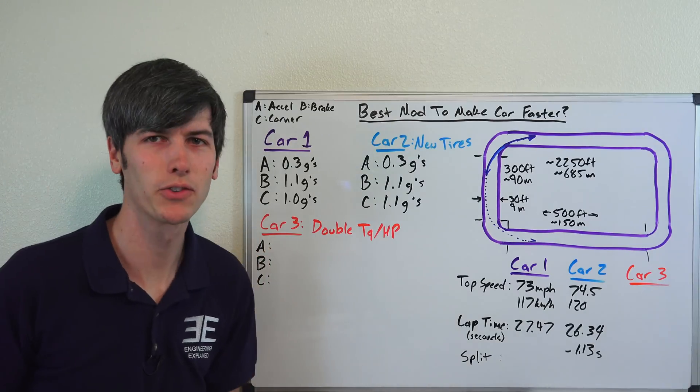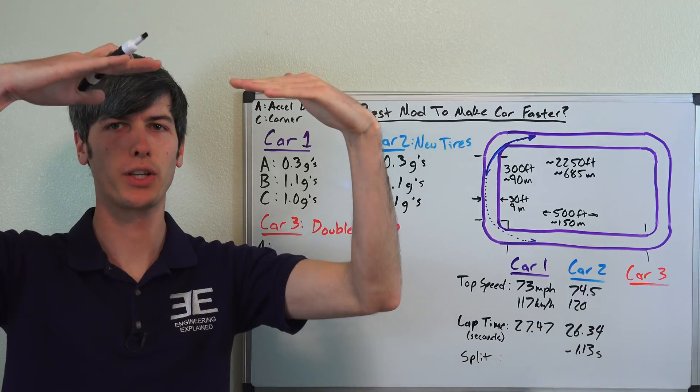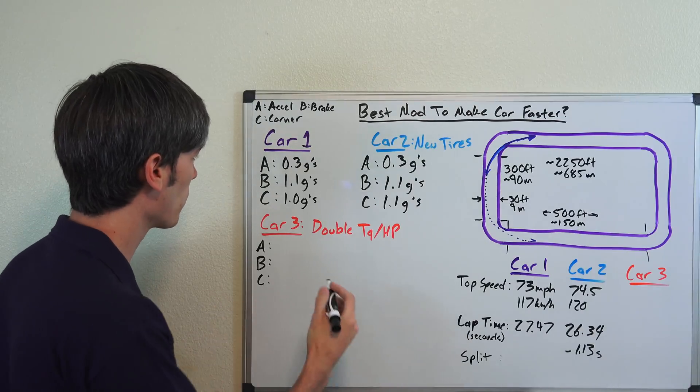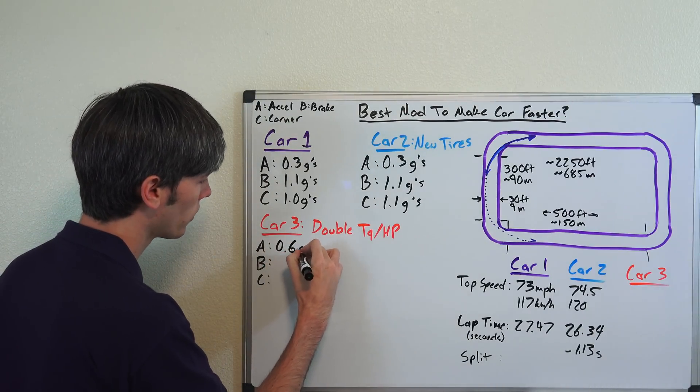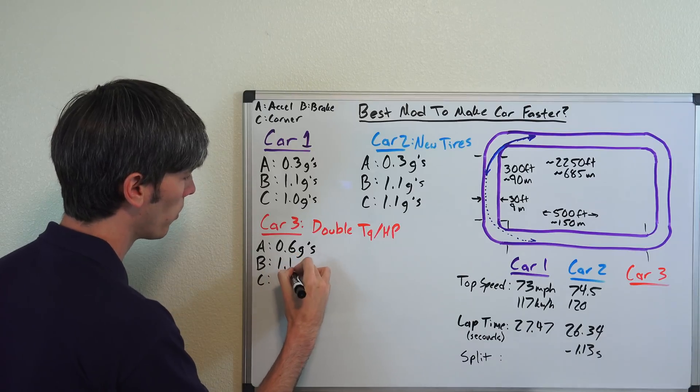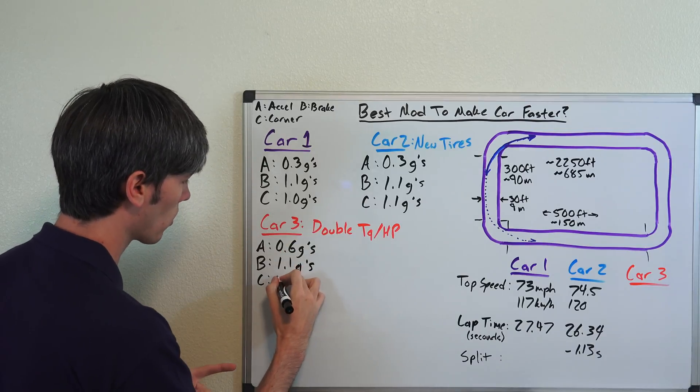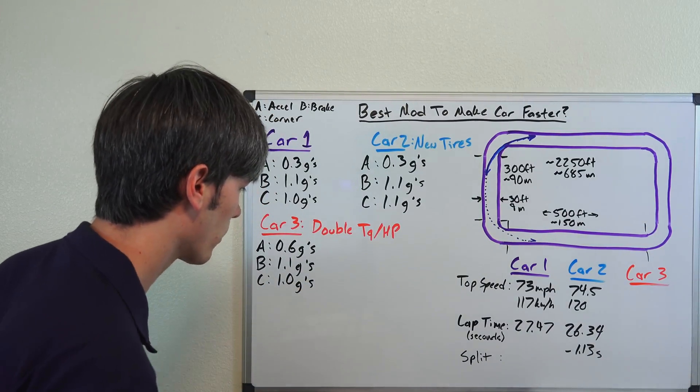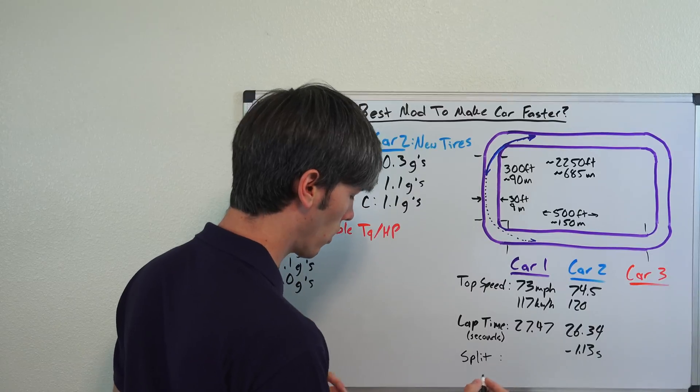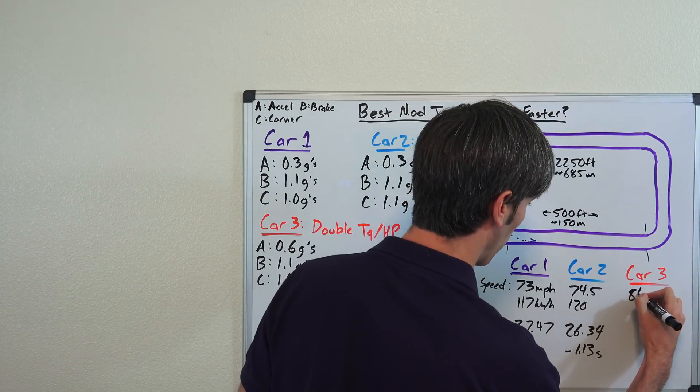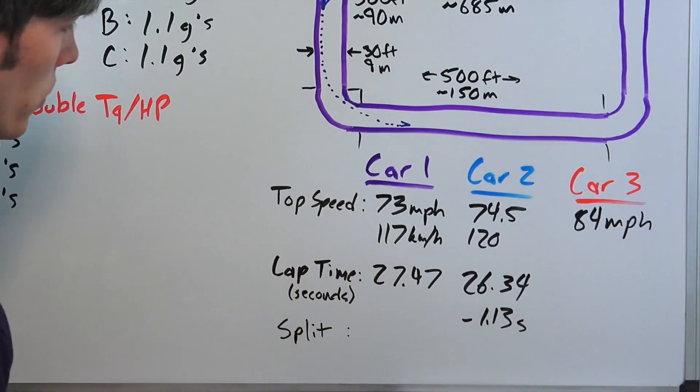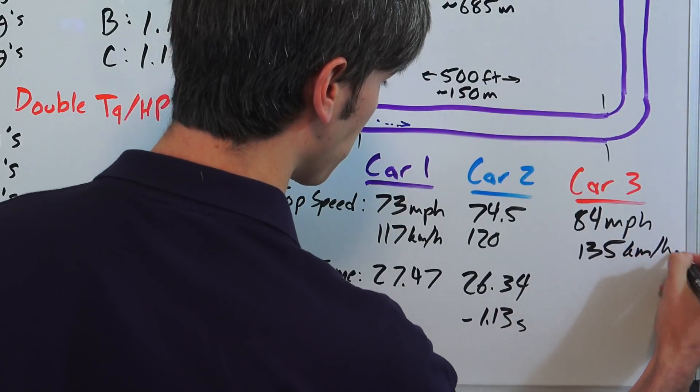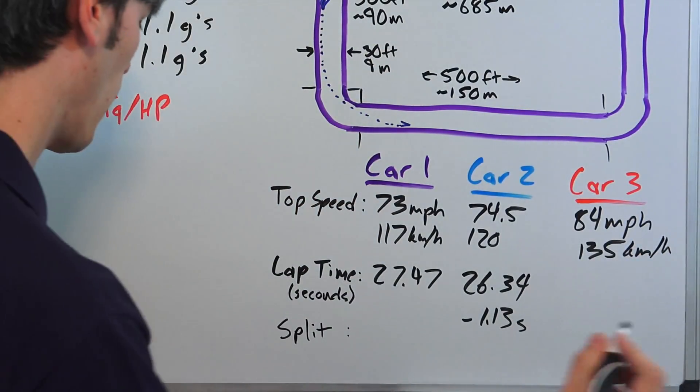Now let's take a car and double its torque curve. Let's essentially just take that torque curve and shift it up twice, and that will essentially double the horsepower as well. So we're able to now accelerate at 0.6 G's. Our braking is going to remain the same at 1.1 G's. We don't have those nice tires so we're still cornering at 1.0 G's. Now our top speed on the track because we've got so much more power is going to be 84 miles per hour on these straights, the equivalent of 135 kilometers per hour.